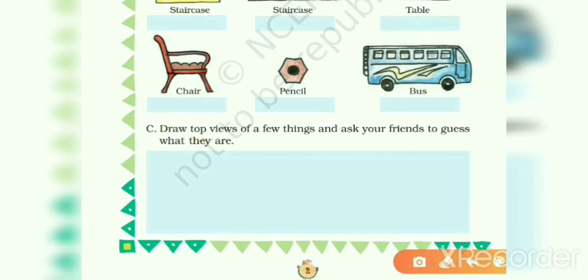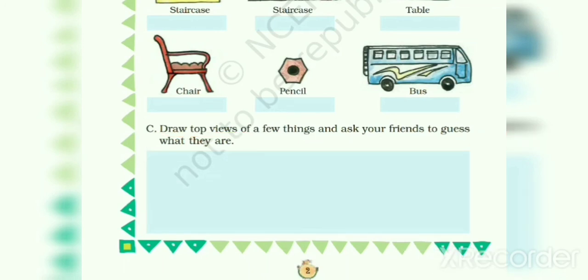Exercise C: draw top views of a few things and ask your friends to guess what they are. Here you can draw the top view of a pencil or table, which we showed in Exercise B. You can also draw a remote, mobile, or different things available at your home and ask your friends. Here we complete the concept of viewing objects from different sides. I hope you all understand this topic clearly. We will continue this chapter in our next video.